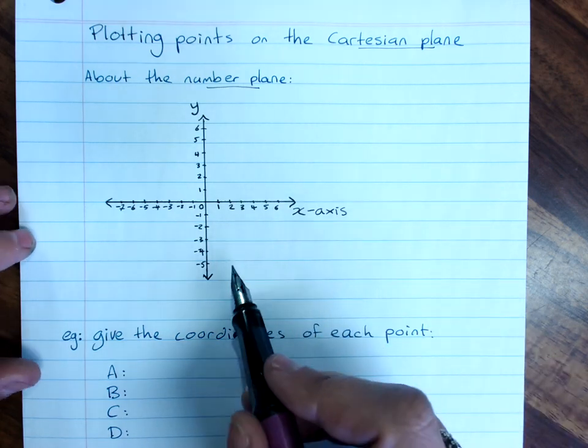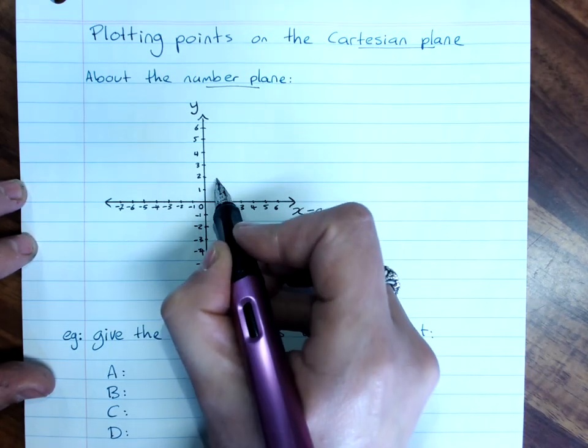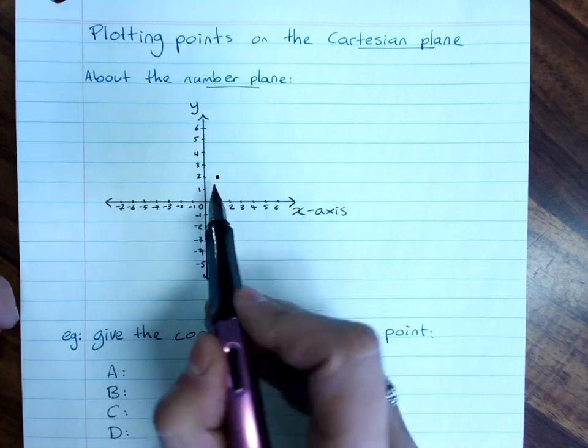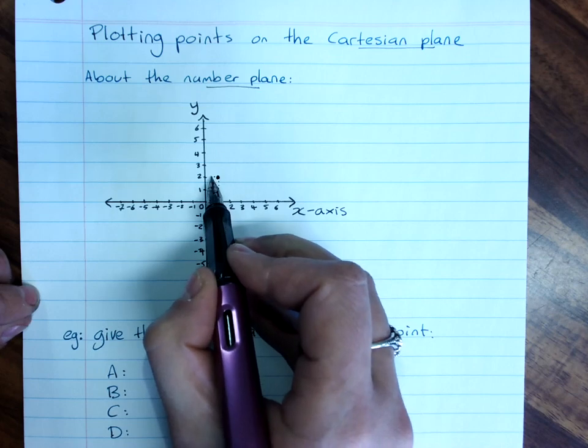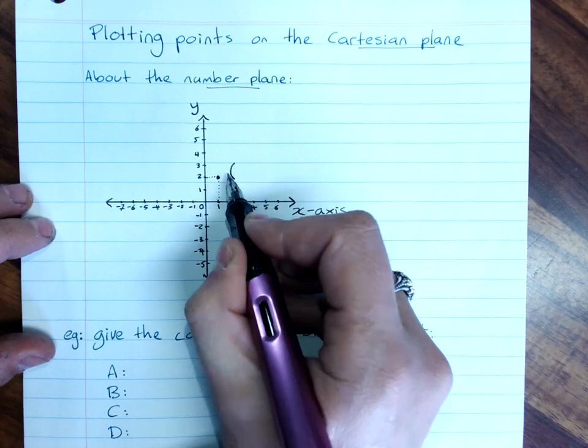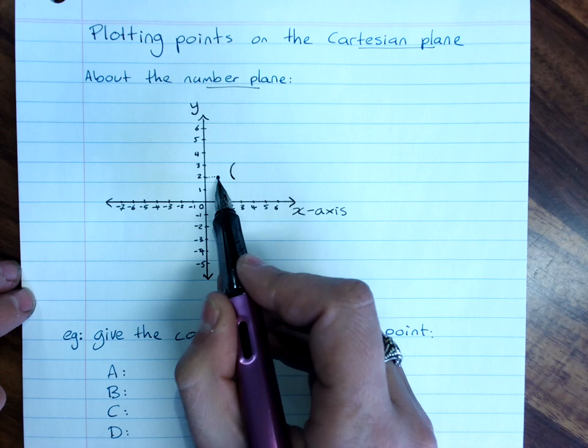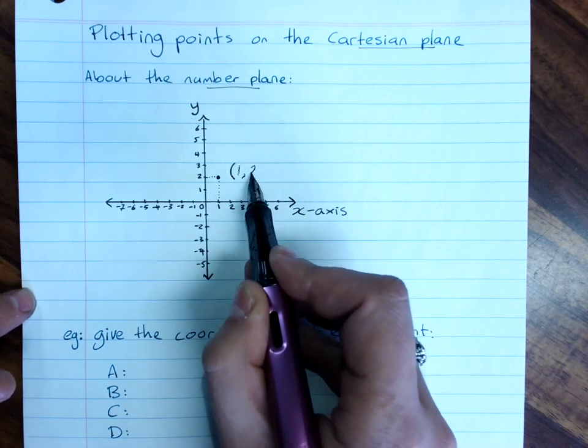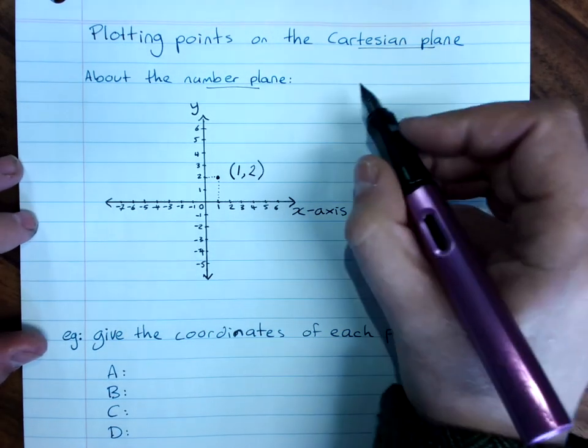So any point on the number plane, let's say for example, this one here, can be described by saying where it lines up with on the x-axis and where it lines up with on the y-axis. And I give the coordinates in brackets, so the coordinates describe where the point is. In brackets, I give the x-coordinate first, so that's one, and the y-coordinate second, that's two.